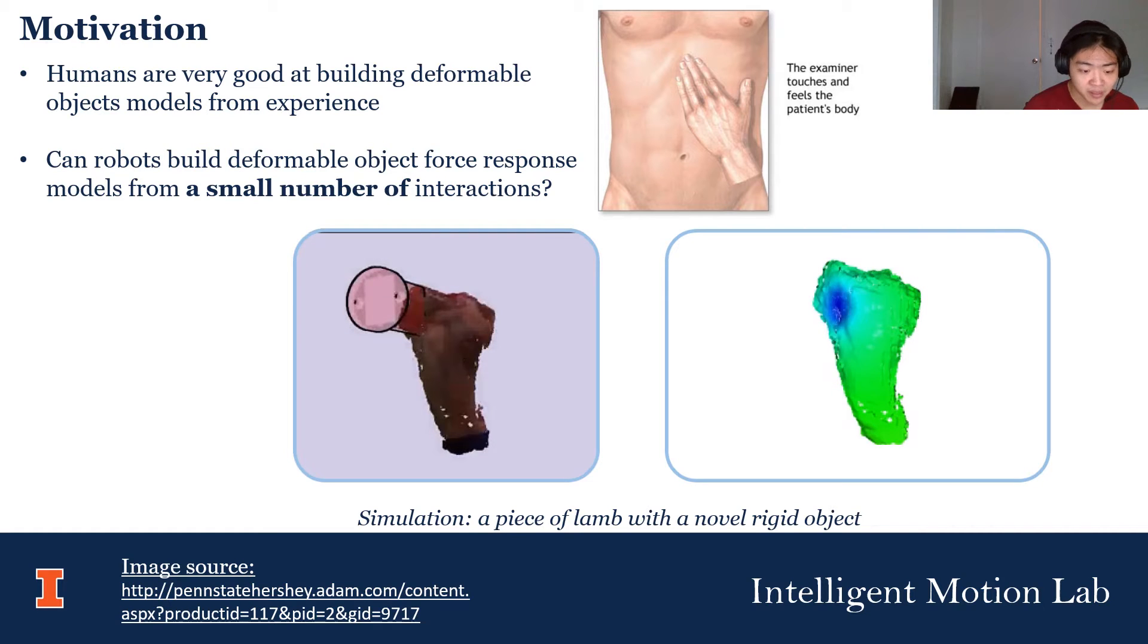In this paper, we propose a method for a robot to model a soft object sufficiently well after a few touches, so that it can simulate its behavior in very different scenarios, specifically by being able to simulate contact with a rigid object that the robot has never seen before.